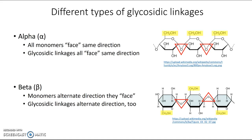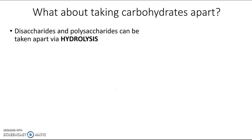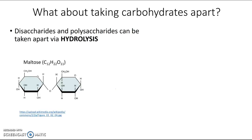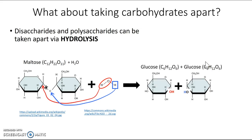Now you know how to build larger carbohydrates, but what about taking them apart? The reaction for that is hydrolysis. Here we have the maltose we put together earlier. To break it apart using hydrolysis, we need water. An enzyme comes along, breaks the glycosidic linkage, and splits the water molecule — the hydroxyl group goes to one carbon and the hydrogen attaches to the oxygen on the other side. At the end of the reaction, we have split the maltose back into two glucose molecules.